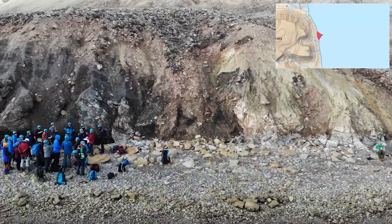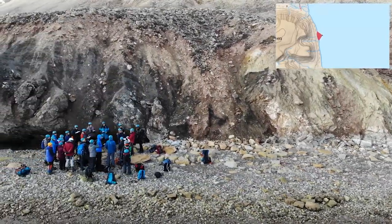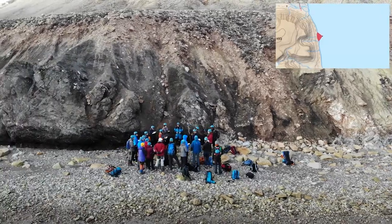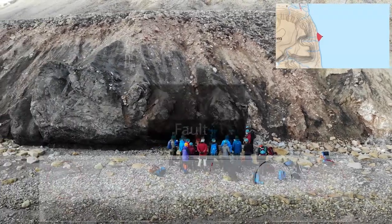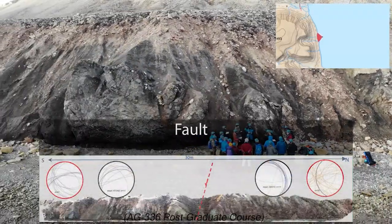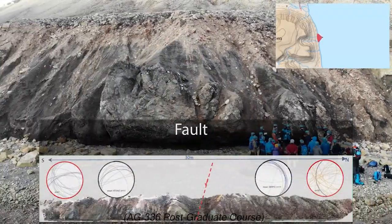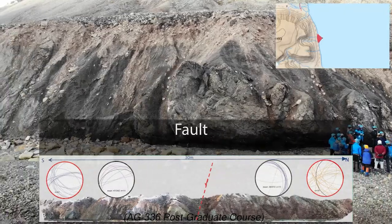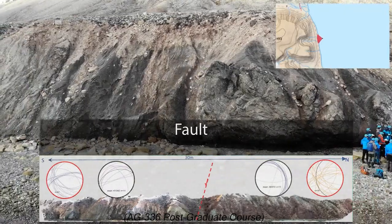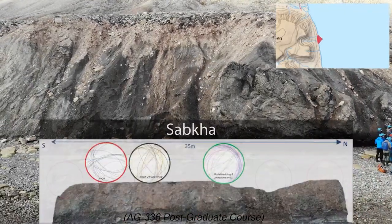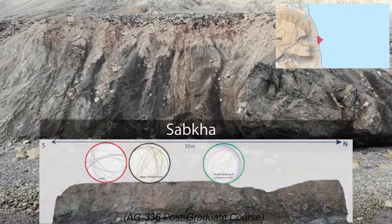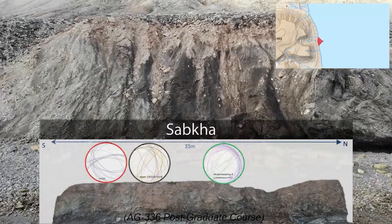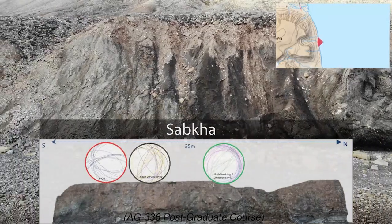This is drone footage of Mimabukta beach, which is just south of Pyramiden. At the bottom of the screen you can see where students made a virtual outcrop model and combined it with structural measurements from the field in order to analyse a big fault that is actually invisible to the naked eye.